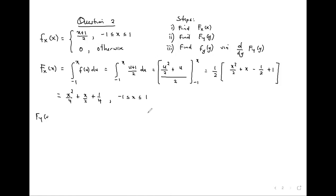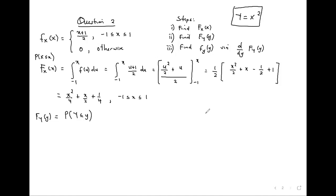For step two, F_Y(y) = P(Y ≤ y). Since Y = X², we substitute: P(X² ≤ y). To isolate X, take the square root of both sides, which gives plus or minus root y, so we have -√y ≤ X ≤ √y.